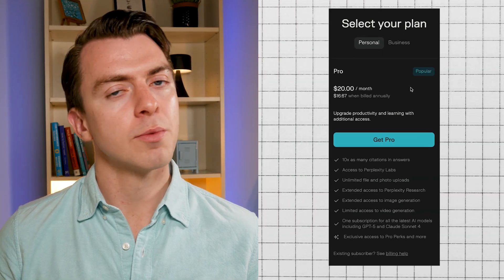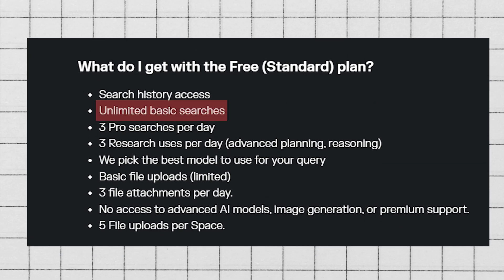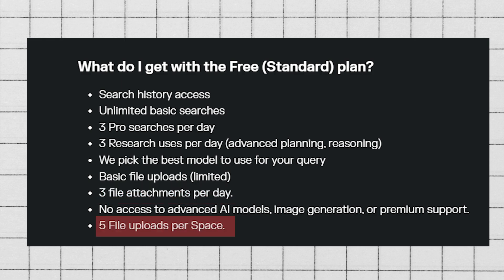Before we dive into Perplexity Pro, which is the paid plan, let's look at what the free plan offers. Spoiler alert — it's actually pretty generous. With the free plan, you get unlimited basic searches plus three pro searches daily. Pro searches pull three times more sources and use multi-step reasoning, so you'll get better results. You also get three deep research runs per day, where AI spends two to four minutes reading dozens of articles to build a structured report. Basic file uploads work too — three attachments daily and five files per workspace. The free plan is perfect for testing whether Perplexity fits into your workflow before upgrading.